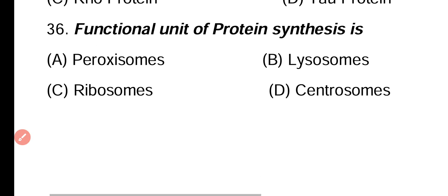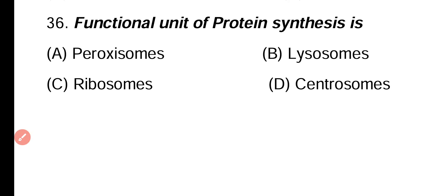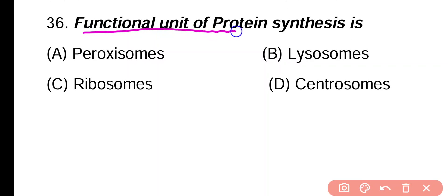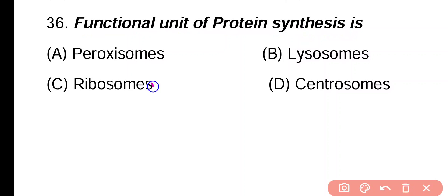Question 36. Functional unit of protein synthesis is: peroxisomes, lysosomes, ribosomes, centrosomes. Correct answer is option C. Ribosomes are responsible for protein synthesis.